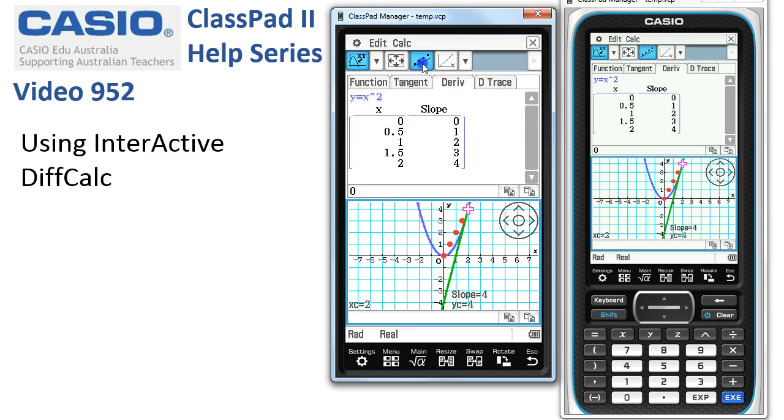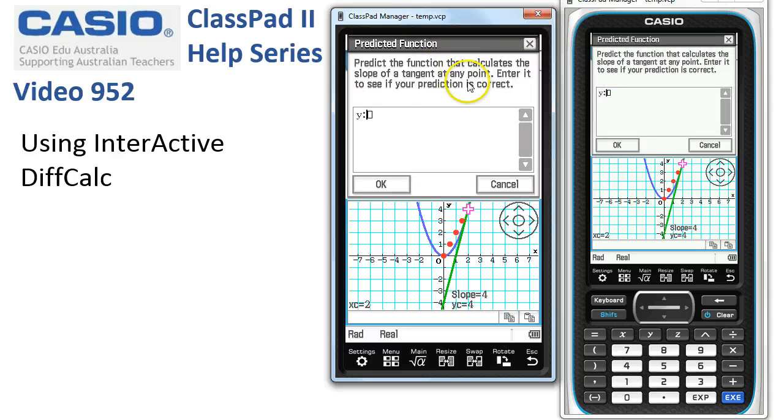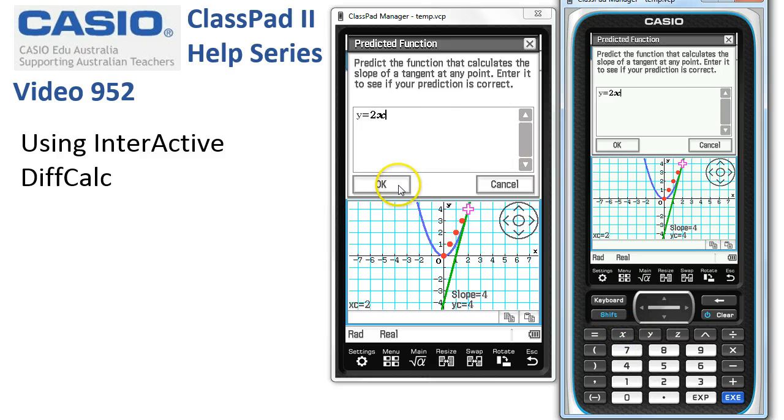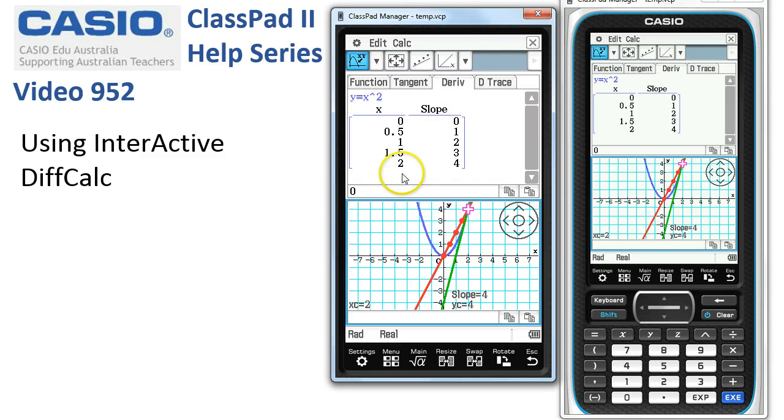We tap onto this icon just underneath calc and it says make a prediction. So we're going for 2x and we'll say OK. And ClassPad's drawn in our line in red through the points and it looks like we've done a pretty good job.